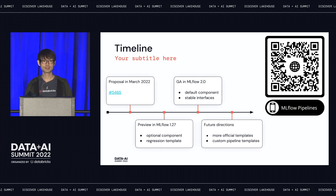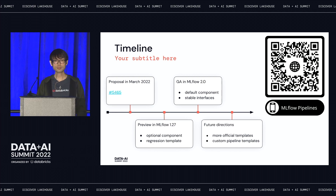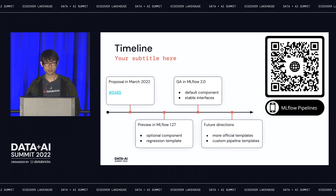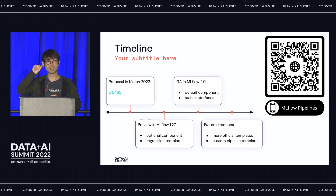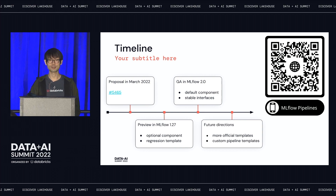Last question: can we add hyperparameter optimization to the pipeline? Yes, great question. This is something we've already been thinking about — integrating AutoML into the train step. Hyperparameter tuning is definitely in there. Actually, right now you can already use scikit-learn's built-in hyperparameter tuning with GridSearch without any problem, because all we ask for is just the estimator, and GridSearch is an estimator. Thanks everyone for coming — give them a round of applause.